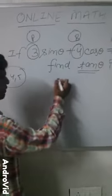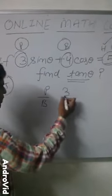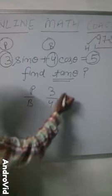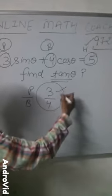We know that tangent theta equals perpendicular over base. Perpendicular is 3, and base is 4. So, tangent theta is 3 by 4.